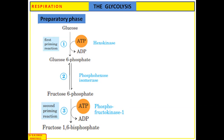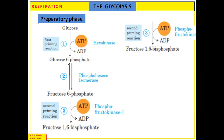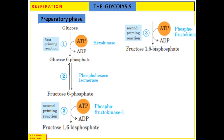This is the second rate-limiting and irreversible step of glycolysis. Fructose-1,6-bisphosphate is broken down into the three-carbon-containing glyceraldehyde-3-phosphate (PGAL) and dihydroxyacetone phosphate (DHAP). Glyceraldehyde-3-phosphate is a three-carbon aldo-sugar, while dihydroxyacetone phosphate is also a three-carbon-containing sugar. This reaction is carried out by the enzyme aldolase.